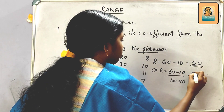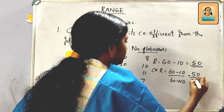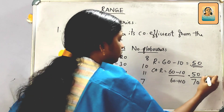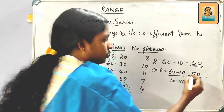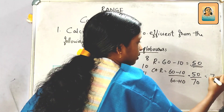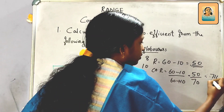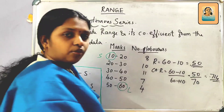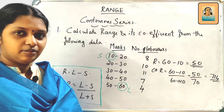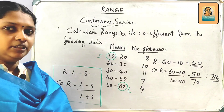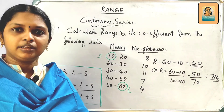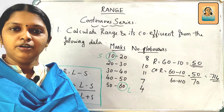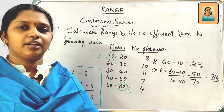That is 50 divided by 70, equal to 0.714. So this is the quartile deviation section next.